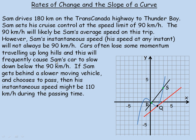Also, if Sam decides to pass a slower moving vehicle, then while he's passing, his instantaneous speed might be 110 km per hour, or perhaps 115 — something over 90 probably. We could also calculate an average speed for the passing time, for maybe that 30 seconds or so, however long it takes him to pass. That would probably be higher than 90 km per hour as well.